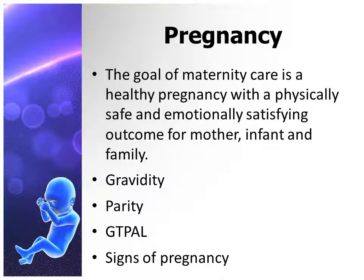Some terms you need to be familiar with: Gravidity is the number of pregnancies a woman has had, regardless of the outcome. Parity or para is the number of pregnancies that have reached 20 or more weeks. GTPAL stands for gravidity, term, preterm, abortions (whether miscarriage or elective), and living children.